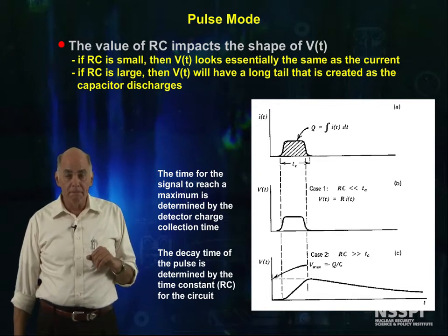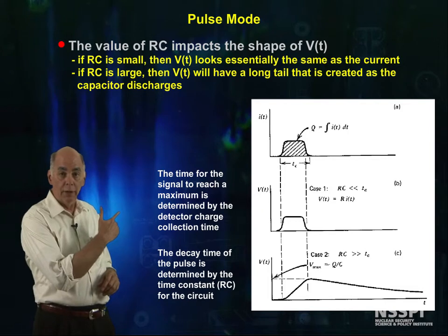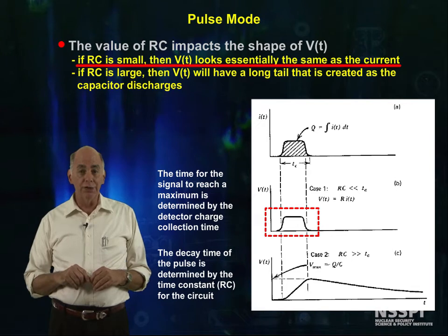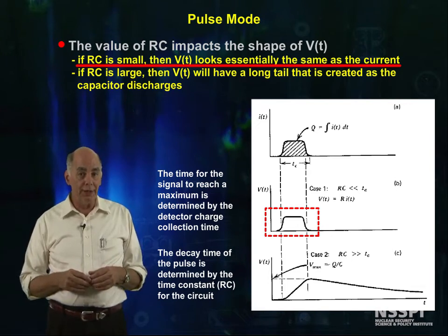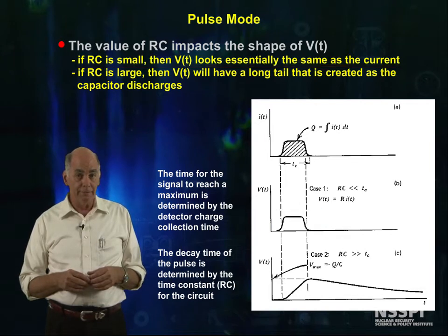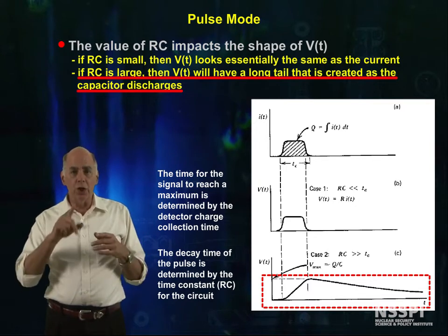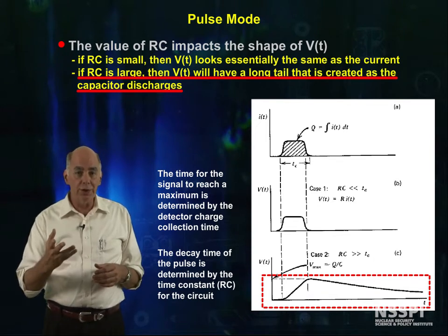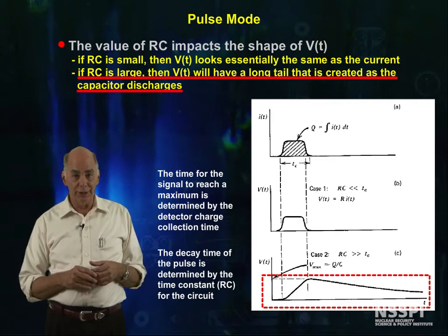Let's talk about that. We will end up measuring the time-dependent voltage across the resistor R. If the RC constant is very small, then the voltage is essentially the same as the current, and it will faithfully track the charge collection as it takes place in the detector. If the RC constant is large, on the other hand, it creates a long tail in the signal because the voltage initially charges the capacitor, and then the capacitor slowly discharges to cause the tail on the signal.